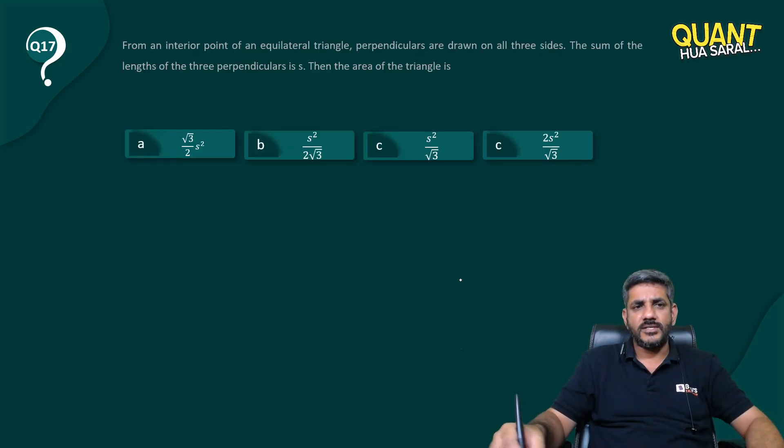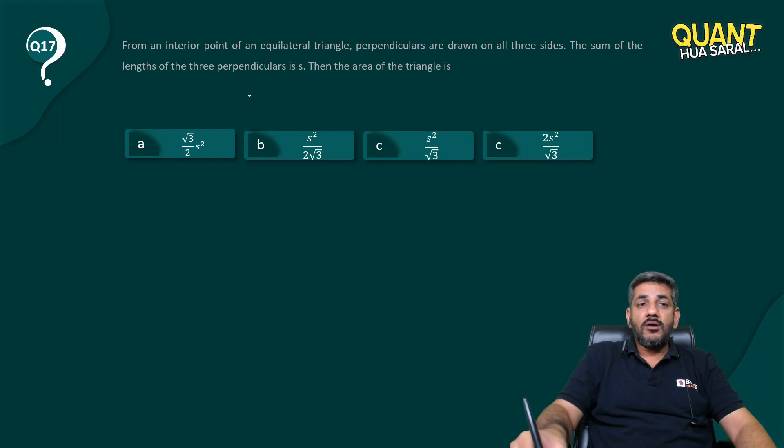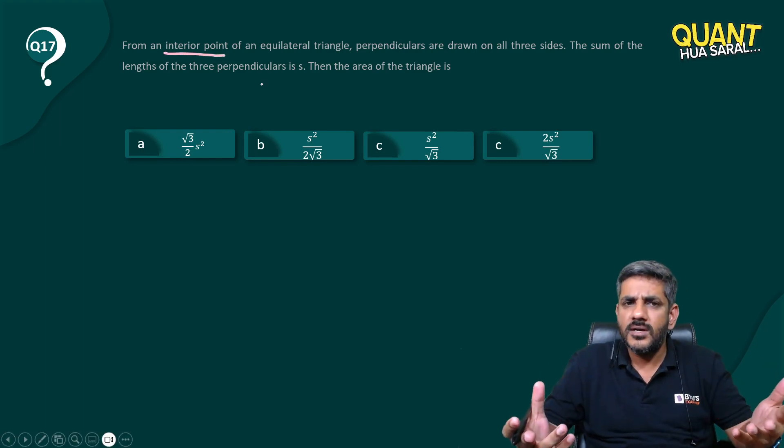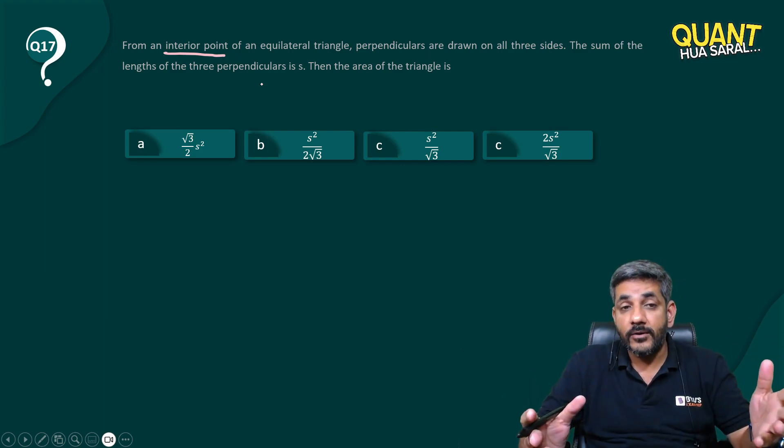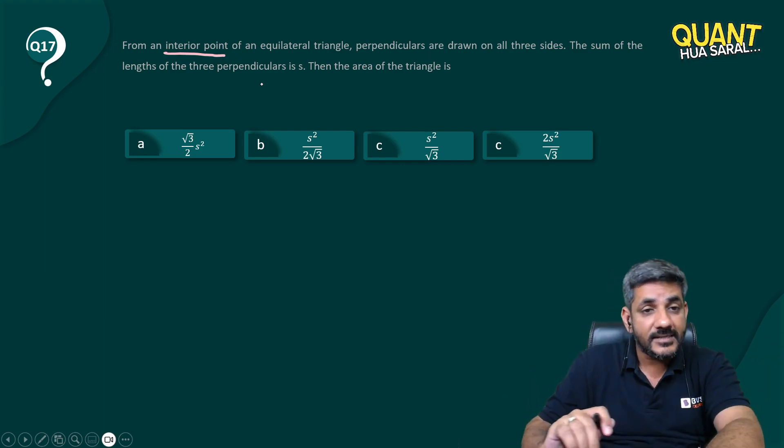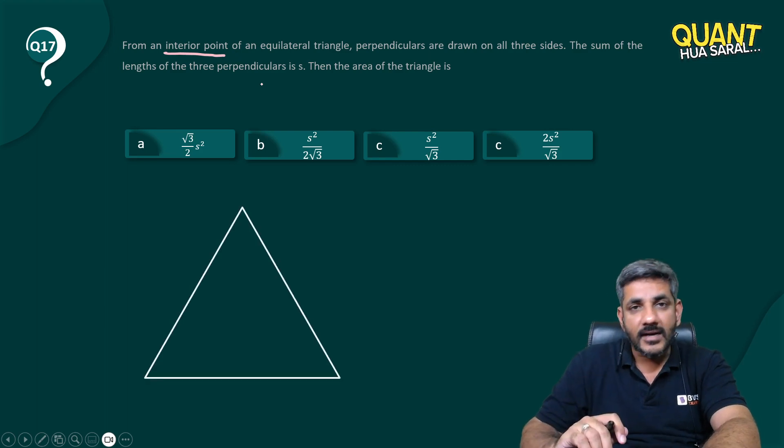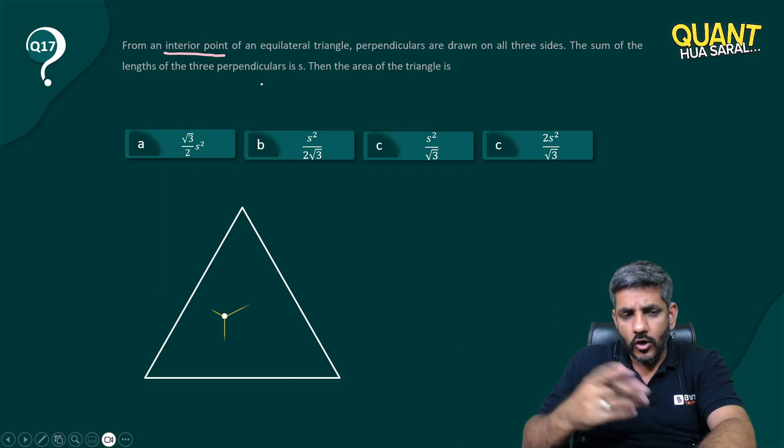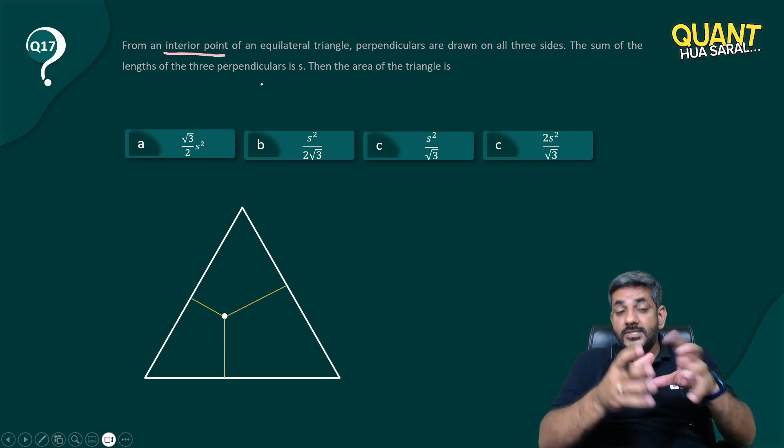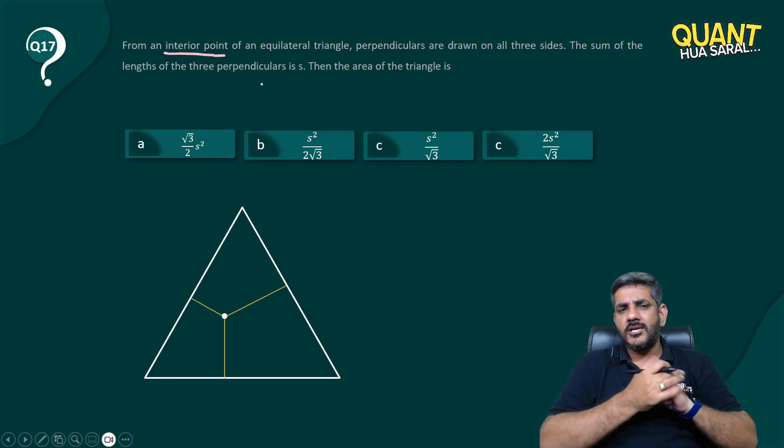That's what the question is asking me. Now, I said from an interior point of an equilateral triangle—where is that point? No one knows. It can be anywhere. From that point, three perpendiculars are drawn and their sum of the lengths is s. So I just made an equilateral triangle. I just randomly took a point anywhere, drop the three perpendiculars. Now, sum of these three perpendiculars is equal to s.